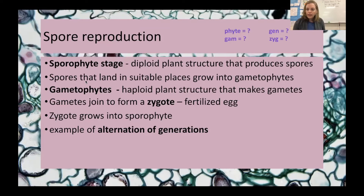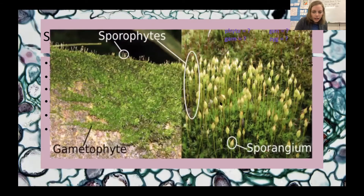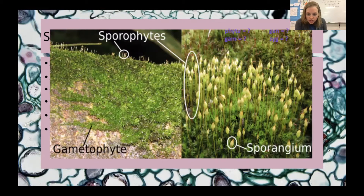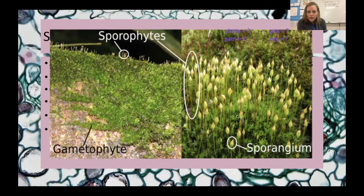Spores that land in suitable places grow into gametophytes — the word has 'gamete' in it. These gametophytes are haploid and they produce eggs and sperm. Once the spore lands it grows into the little green structure of the moss, which has only one set of DNA. It produces eggs and sperm by mitosis. Eggs form in hollowed-out structures at the ends of the leaf-like parts, while flatter structures called splash pads make the sperm. The sperm has a flagella and swims — when it rains, sperm washes into the tube containing the egg, fertilizing it to produce a diploid zygote.